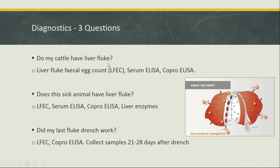The liver fluke faecal egg count involves collecting faeces from multiple animals and sending them to a lab for a sedimentation test. The serum ELISA usually requires bleeding the animals, though in dairy it can be done on milk samples — very convenient. The coproantigen ELISA relies on faeces but can detect fluke at a younger stage than faecal egg count because it detects antigens before fluke start laying eggs. Each test has its role depending on which question you're trying to answer.